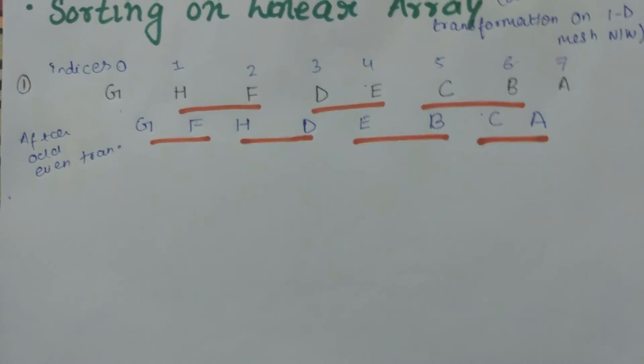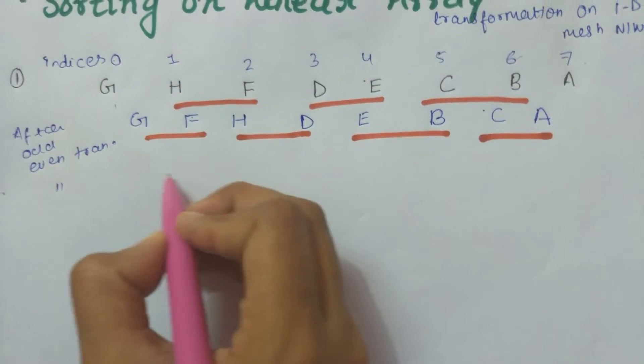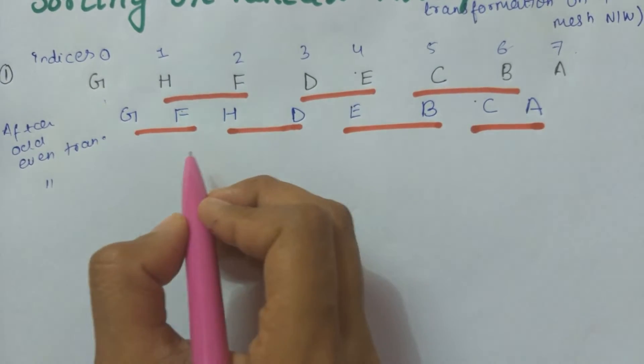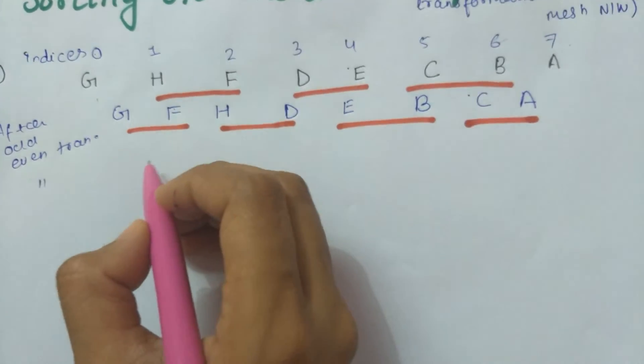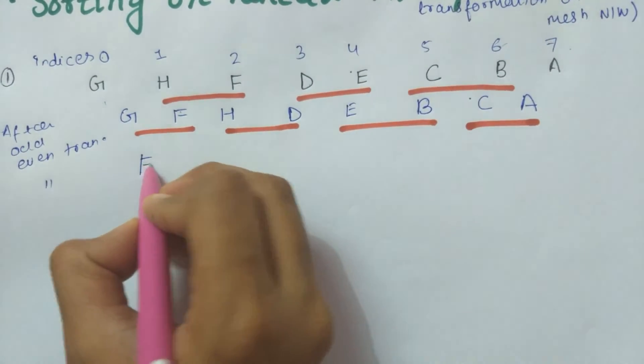If it is in proper order, we will leave them. If not, we will swap the numbers. G and F are not in proper order, so we will write F, G, then D, H, then B, E, and then A, C.